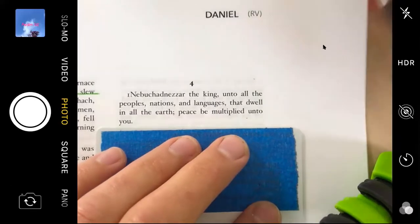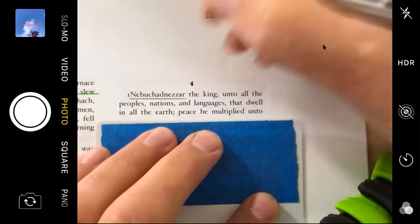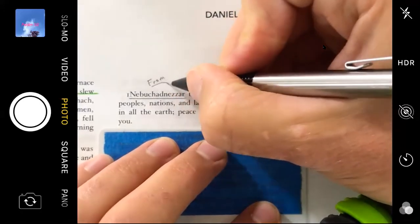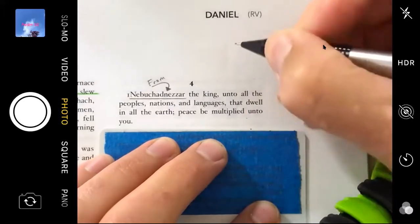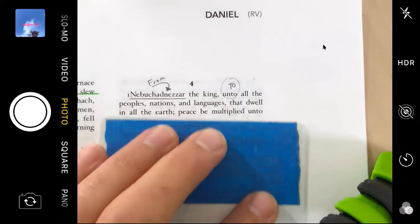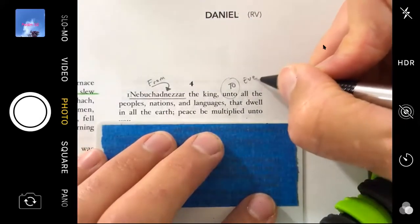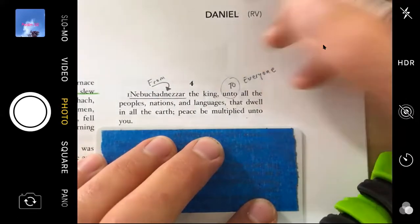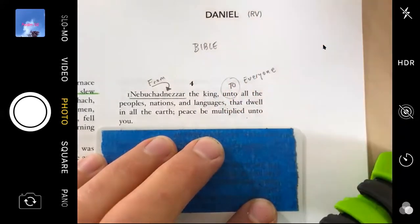Nebuchadnezzar, I think is saying I hope everybody feels peaceful for you. This is the way that New Testament letters begin. Paul to the church in Corinth. So this is from Nebuchadnezzar, and it's to all the peoples, nations, and languages. To everyone. So Daniel chapter 4 in the Bible is written by whom? King Nebuchadnezzar.